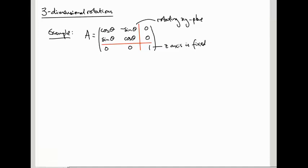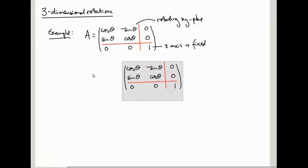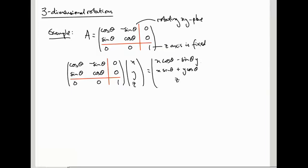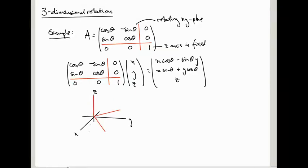If we multiply this matrix into a vector (x, y, z), we get cos θ · x − sin θ · y; x sin θ + y cos θ; and z. So the height z is fixed, and the x and y directions get rotated. The coordinate axes end up pointing in new directions — the z-axis is fixed, and the x and y axes are each rotated by angle θ.